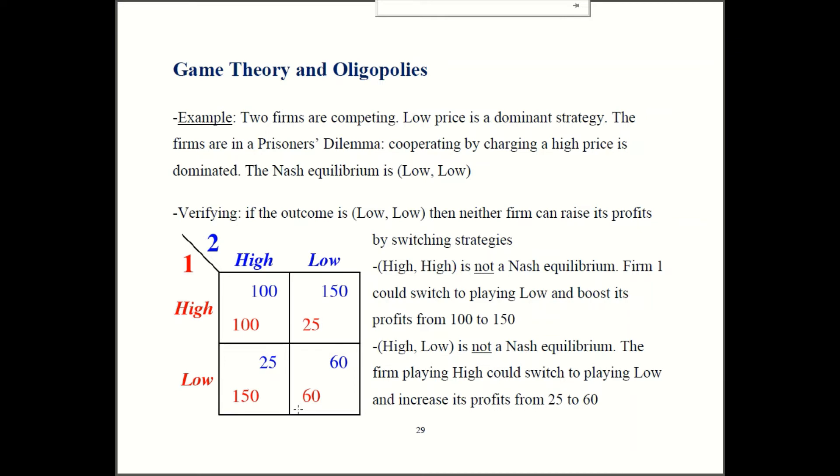So to be a Nash equilibrium, recall, that means that no single firm can change strategies and get a higher profit. So we're both playing low, we're both getting 60 right now. So the question becomes, can either firm switch and raise their payoffs? Well, if firm one switches to playing high while firm two is still playing low, then our profits fall from 60 to 25. This is the outcome when firm one is high and firm two is low. Well, that's going to reduce my profit. I was getting 60 before when I played low, so I'm not going to want to switch.